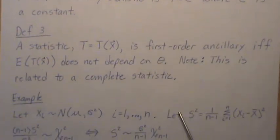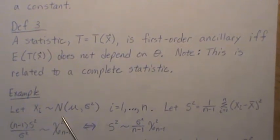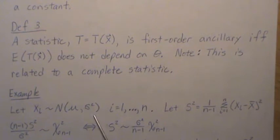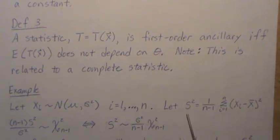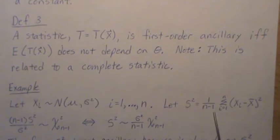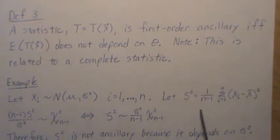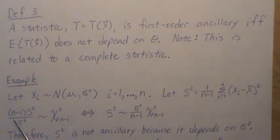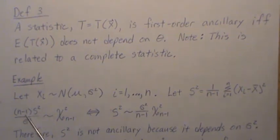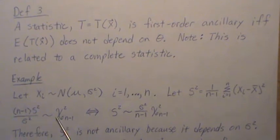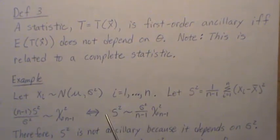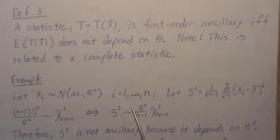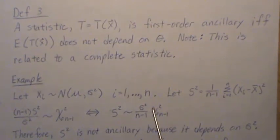Now, an example. Let Xi be normally distributed, mean mu, variance sigma squared, i equals 1 to n. Let S squared be the sample variance. Now, it's widely known that if you multiply it by n minus 1, and that's really to get rid of this divisor, divide by the population variance, that this quantity is a chi squared with n minus 1 degrees of freedom. So then if we multiply those over, then S squared, the sample variance, is distributed with this quantity. It's a constant times a chi squared distribution.